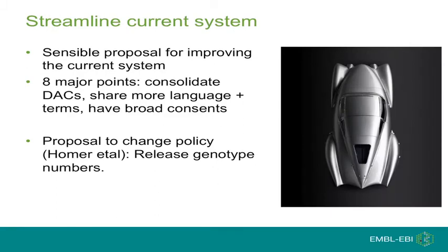What about streamlining our current access? In the paper written by Adam and others, there were eight points. To consolidate DACs rather than having a DAC for every study, to share more language and terms, to have broad consents, and to have standardized consents. All of these are relatively obvious and good things, and one should definitely do these things.